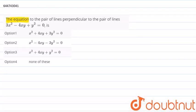the equation to the pair of lines perpendicular to the pair of lines 3x² - 4xy + y² = 0. We have been given the pair of lines as 3x² - 4xy + y² = 0.